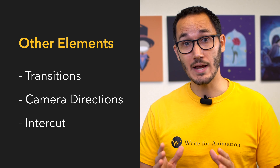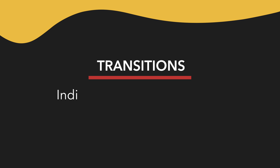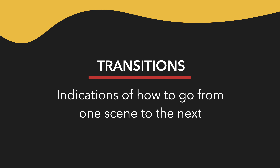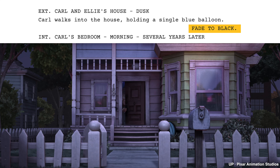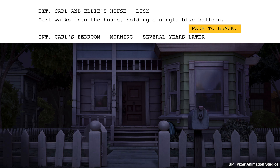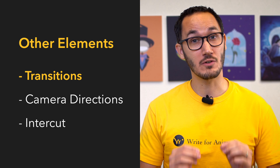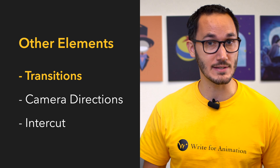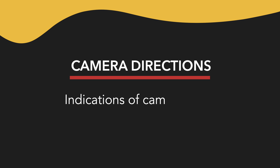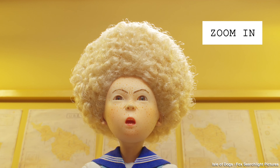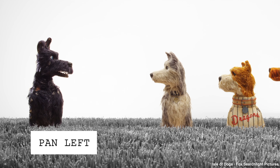Those are the basics. Now let's take a quick look at important elements you may find in a script. Transitions are indications of how to go from one scene to the next — usually 'cut to' or 'fade to.' They are written in all caps and are usually aligned to the right, but you may write them in the action block as well. Only use them when you're trying to make a point on how the scene should be experienced. Camera directions are indications of camera shots or movements — phrases like 'close on,' 'dolly,' 'zoom in,' 'zoom out,' etc. — written in all caps in the action block. Use them sparingly.